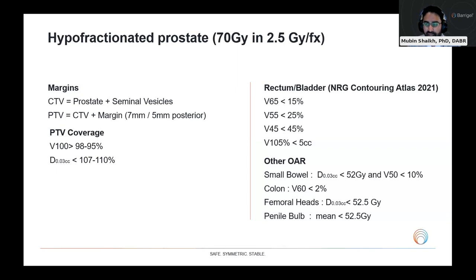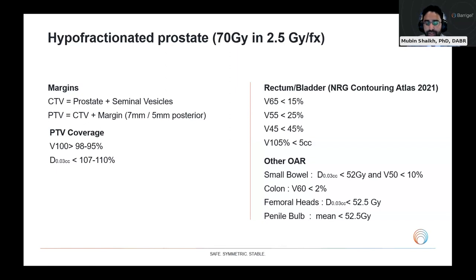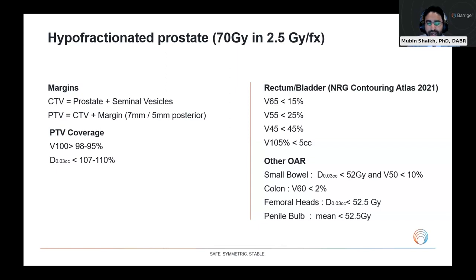I want to be honest: these rectum and bladder constraints are very easy to hit most of the time. But when you have a patient with spacing from Beragel, meeting those constraints for the rectum is very easy. Let me tell you a story. A few years ago, I hired a junior dosimetrist — he had just gotten out of school with a CMD, done the coursework, the didactics, and had an understanding of treatment planning. I gave him these constraints and said, here's a prostate patient with a spacer — give it your best shot. A couple hours later, he came back and showed me what he got.